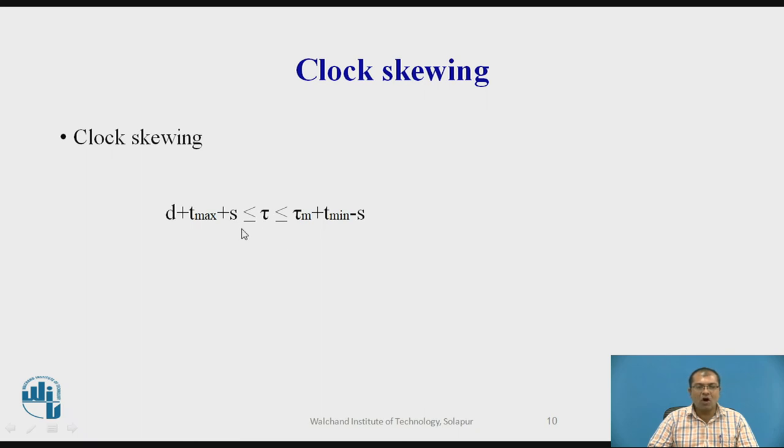So this tau value is selected in such a way that it should be in this range. For example, tau should be less than or equal to the latch delay plus the stage delay, which is tau max plus s. And this tau value should be less than or equal to tau m plus d min minus s. So this latch delay minimum t value minus skew will be taken plus tau m. So normally the tau is selected in this range.